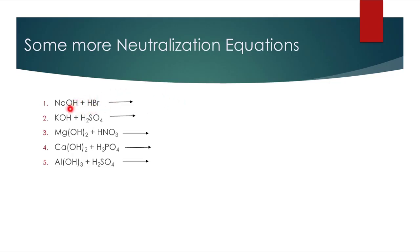Try to solve these equations and write them down by yourself. These are all neutralization equations because they all have acids reacting with bases, so one product will be salt and another will be water. First ionize your acid and base, then combine the hydrogen and OH ions to form water, and use the remaining ions to find the formula of the salt. Hope you understood the lesson well. If you have any problem, you can ask me. Meet you in the next video. Thank you so much.